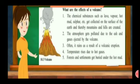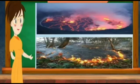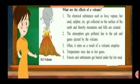When these substances come out of the earth's crust in an eruption and start flowing, it is called a volcano. The effects of a volcano include: chemical substances such as lava, vapor, hot mud, and sulfur get collected on the surface of the earth, and thereby mountains and hills are created. The atmosphere gets polluted due to ash and gases ejected by the volcano. It often rains as a result of a volcanic eruption, temperature rises due to hot gases, and forests and settlements get buried under hot mud.